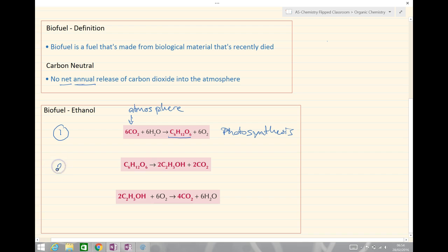In our second step, we can form ethanol by a process of fermentation producing carbon dioxide. Just to remind yourself here that this is in the absence of oxygen, and you'll notice that we form in this process two carbon dioxide.